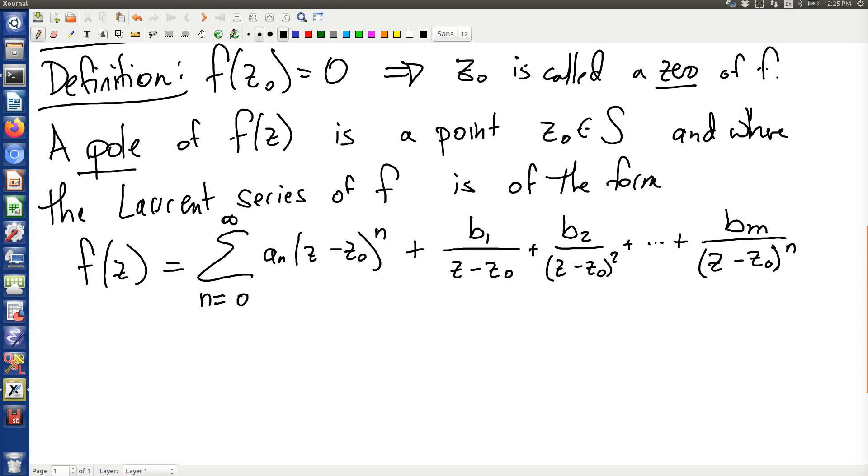Just to distinguish what's going on here, I'll call that m. In particular, you'll notice it stops. It doesn't go on to minus infinity in terms of powers of z. There's an endpoint there. This is called a pole of order m.